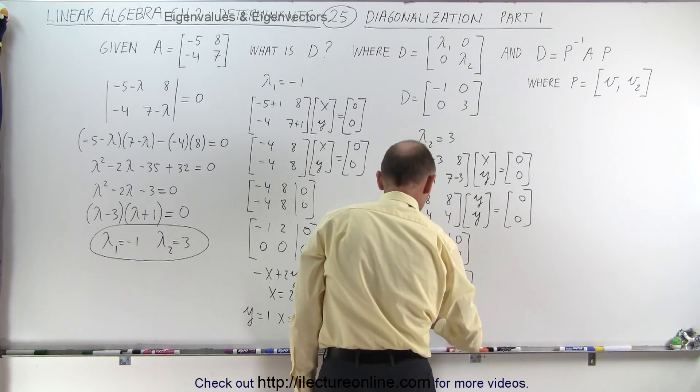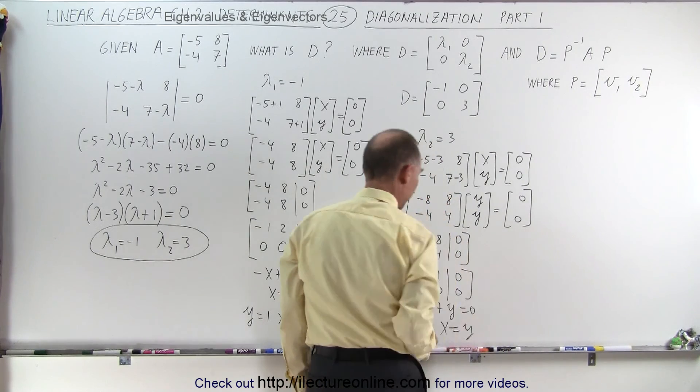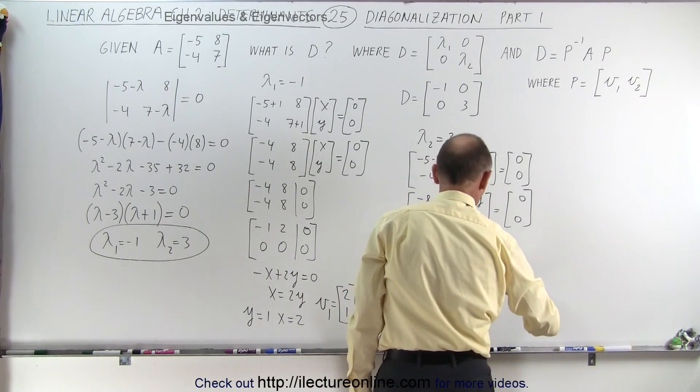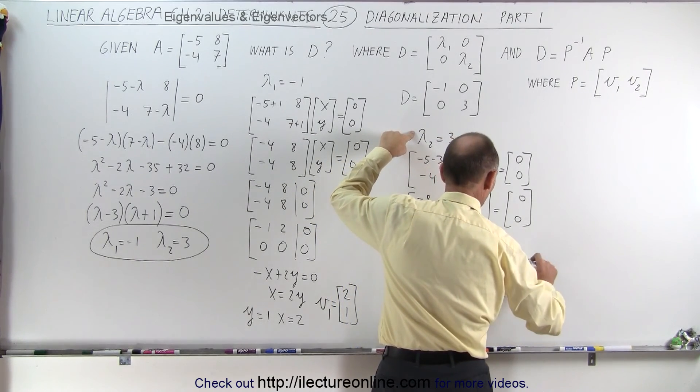Which means that minus x plus y equals 0, or x equals y. Which gives us the second eigenvector corresponding to this eigenvalue of 1 and 1.